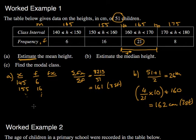And the modal class, that's asking for the most common. And the most common here has 21 people, and it's asking for the class. So then I would write down 160 is the same as less than h, which is less than 170.